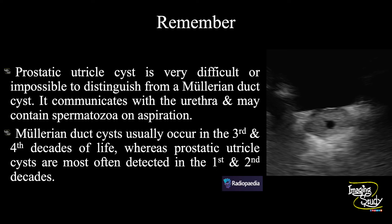It's very difficult to differentiate one from the other. The utricle cyst communicates with the urethra and may contain spermatozoa on aspiration. It is often detected in the first or second decades, whereas the Mullerian duct cysts usually occur in the third and fourth decades of life.